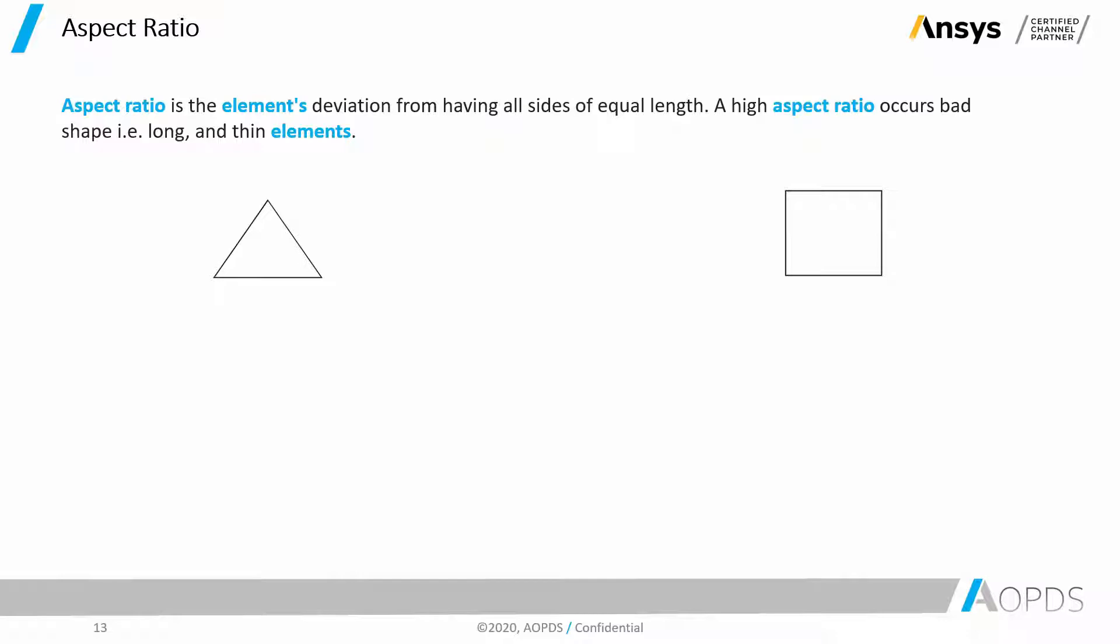Now having a triangle that doesn't have a good aspect ratio is shown here. Same for the quad. It means that the edges are not proportional with respect to each other. If I calculate the aspect ratio for the perfect triangle and the perfect quad, it is going to be 1. And calculating the aspect ratio for these bad elements is going to be 20.